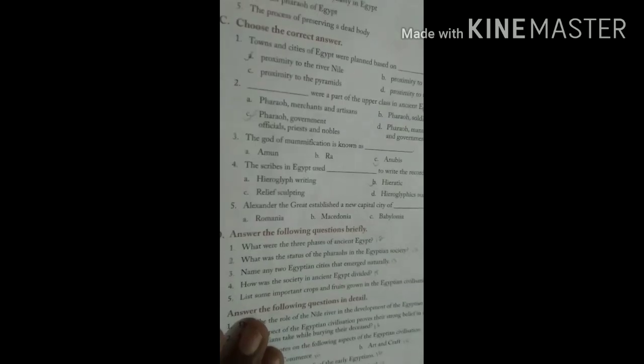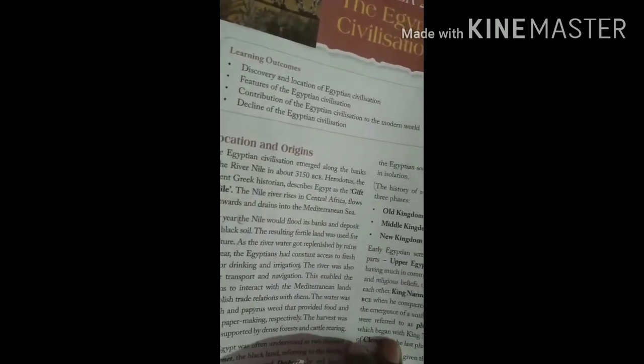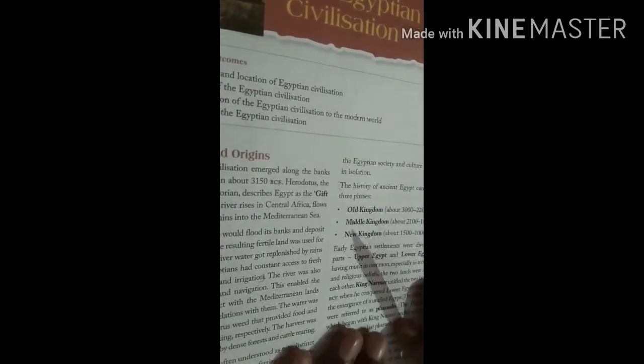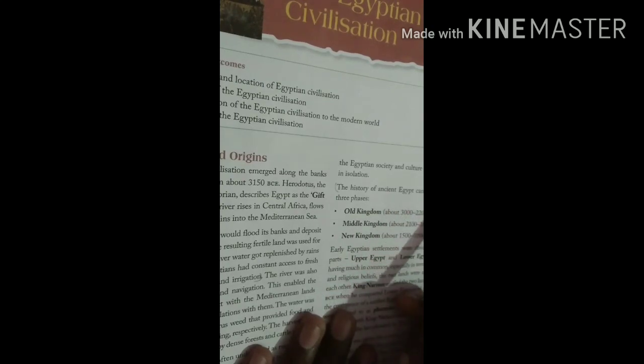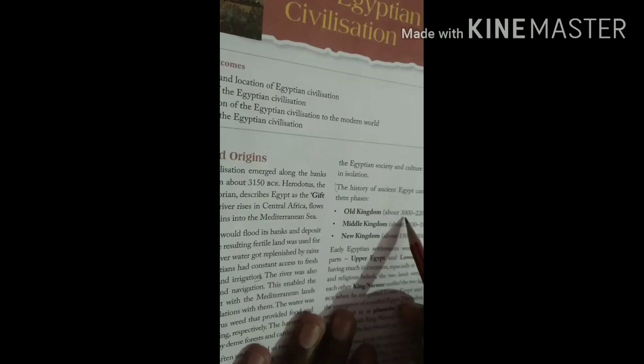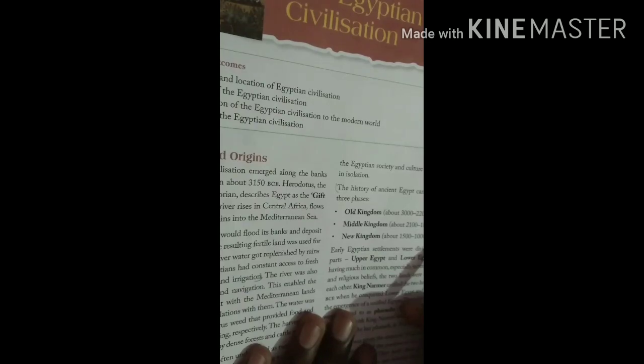Now answer the following questions in briefly. Very short answers you have to write. What were the three phases of Ancient Egypt? This is on page number twelve. The history of Ancient Egypt can be divided into three phases: Old Kingdom about 3000 to 2200 BCE, Middle Kingdom about 2100 to 1800 BCE, and New Kingdom about 1500 to 1000 BCE.